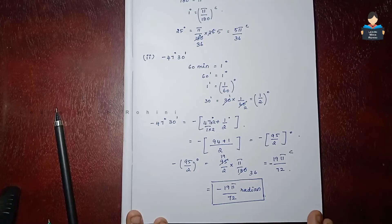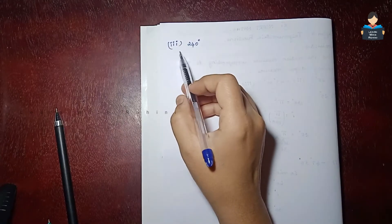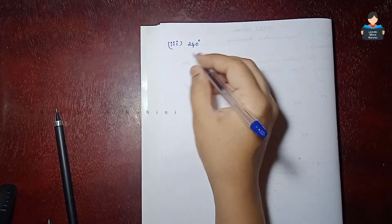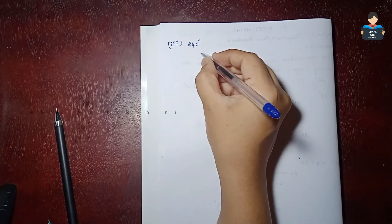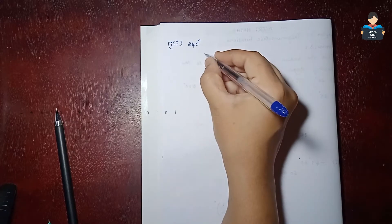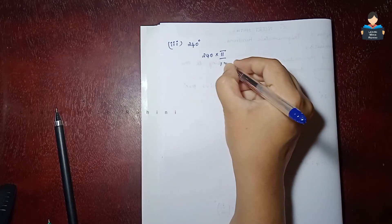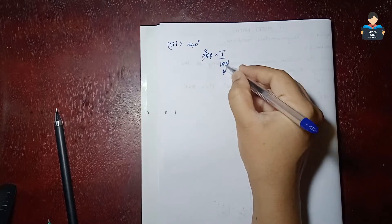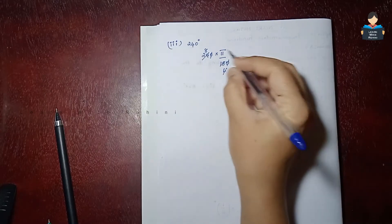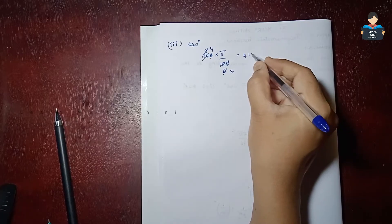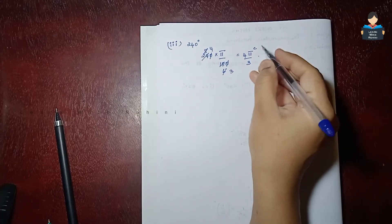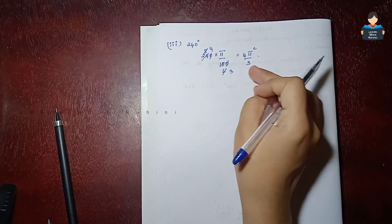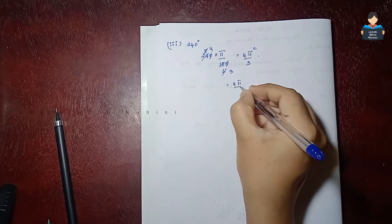Third subdivision: 240 degrees. Straight away convert to radian. So 240 into pi by 180. The zeros cancel, and simplifying 240 by 180: divide both by 60, we get 4 by 3. So the answer is 4 pi by 3 radian.